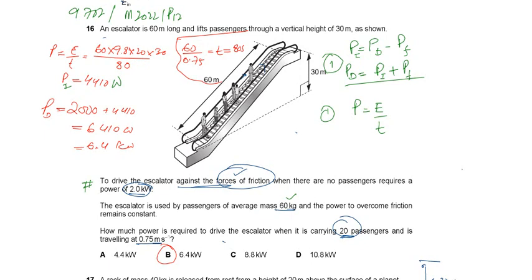In order to find out the power required to lift the passengers, P equals E upon T. E is M times G times H. M is the total mass. Total mass means 20 passengers, and each passenger has 60 kilogram mass, so 60 into 20. The height is 30. So 60 times 20 times 9.8, which is G, times 30 will be the energy.